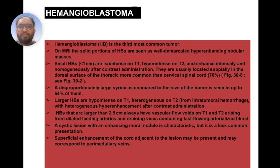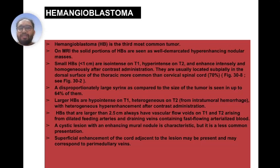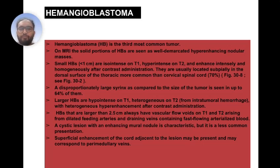Hemangioblastoma is the third most common intramedullary tumor. On MRI, solid portions are seen as well-demarcated hyper-enhancing nodular masses. Small hemangioblastomas are iso-intense on T1, hyper-intense on T2, and enhance intensely and homogeneously after contrast. They are usually located superficially on the dorsal surface of the thoracic cord, more common than the cervical cord, in 70% of patients. A disproportionately large syrinx compared to tumor size is seen in up to 64% of cases. Larger hemangioblastomas are hypo-intense on T1, heterogeneous on T2 from intratumoral hemorrhage, with heterogeneous hyper-enhancement after contrast. Hemangioblastomas larger than 2.5 cm always have vascular flow voids on T1 and T2 from dilated feeding arteries and draining veins. A cystic lesion with an enhancing mural nodule is a characteristic but less common presentation.